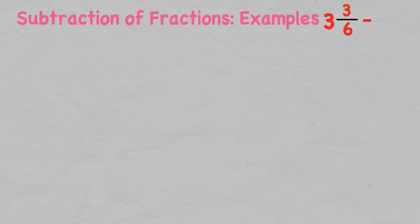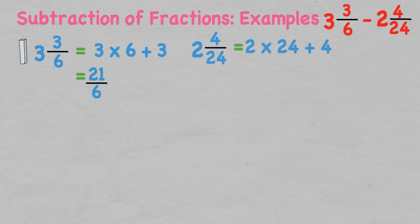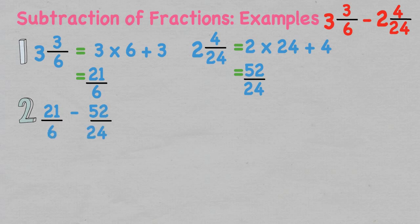Looking at a more complex subtraction problem: three and three over six take two and four over 24. We need to change both mixed fractions into improper fractions. For three and three over six, we multiply the whole number by the denominator and add the numerator, leaving us with 21 over six. For the second fraction, the whole number two multiplied by the denominator 24, then add the numerator four, leaving us with 52 over 24.